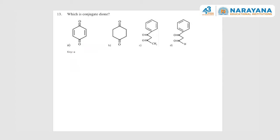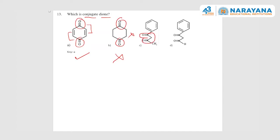Next question: which of the following is a conjugated dione? Looking at the options — one compound is a ketone with conjugation, making it a conjugated dione. Another is a dione but without conjugation, so it's wrong. Another has no conjugation. One is an aldehyde, not a dione. The correct answer is quinone — it is a conjugated dione — so option A is correct.